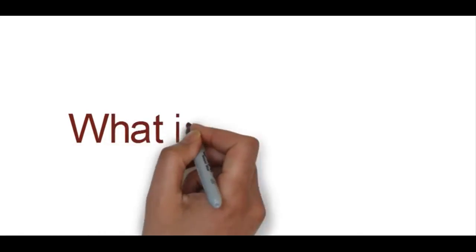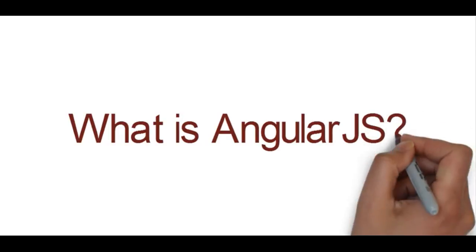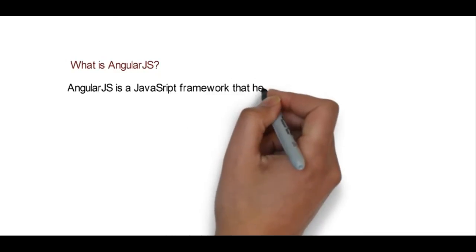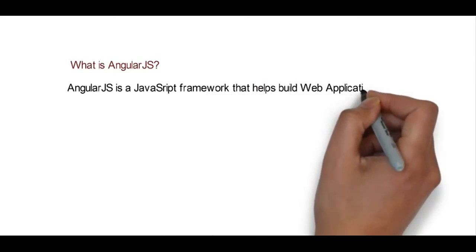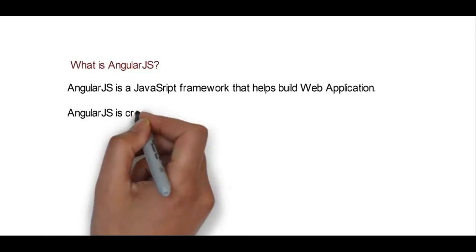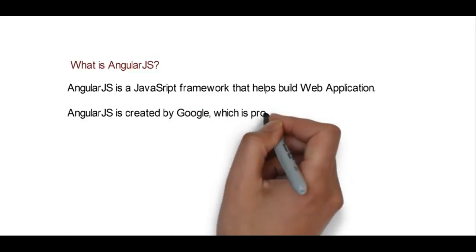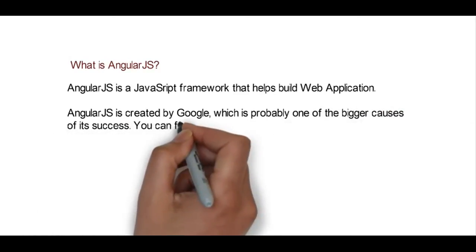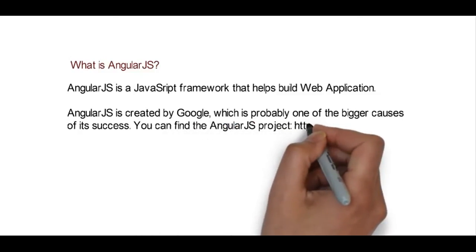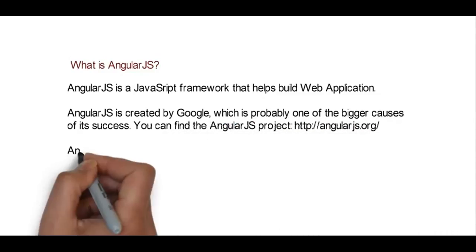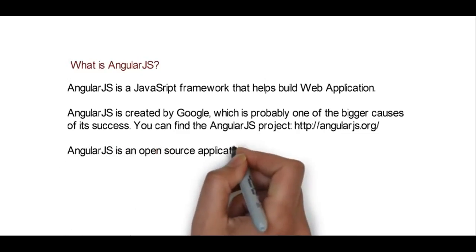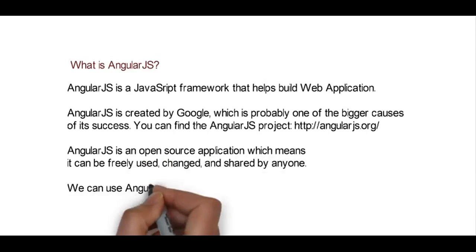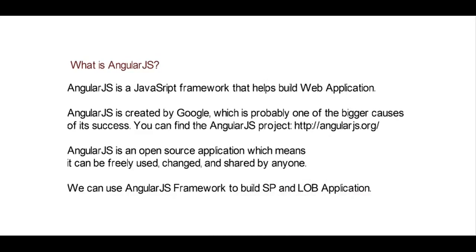The first thing we're going to discuss is what is AngularJS framework all about. AngularJS is a JavaScript framework that helps us build web applications. It was created by Google, which is probably one of the biggest causes of its success. AngularJS is an open source application, meaning it can be freely used, changed, and shared by anyone. We can use it to develop single page as well as line of business applications.